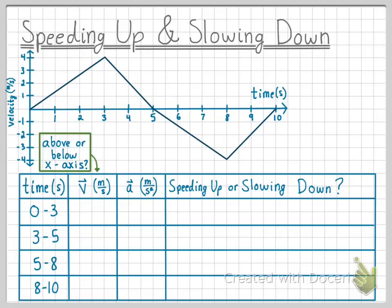When analyzing the sign of the velocity, we simply want to see if the portion of the graph is above or below the x-axis. If it is above the x-axis, the velocity will be positive, and if it is below the x-axis, the velocity will be negative. When analyzing the sign of the acceleration, we simply want to see if the slope of the graph is either positive or negative, since the acceleration is equal to the slope of a velocity versus time graph.